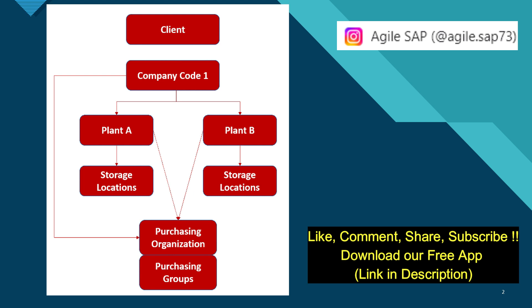Next is a storage location. Storage location is again an org unit which maintains the stocks physically. A plant can have various storage locations like a raw material store or a finished goods store, etc.